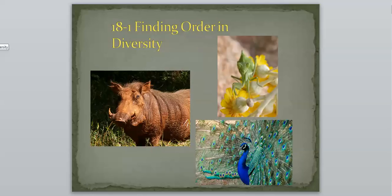All right, hello Bio 2, this is Mr. B, and we are going to start a new chapter today. It's chapter 18 in our books, and it's titled Finding Order and Diversity, and another word is just classification.